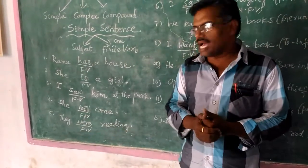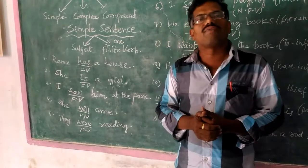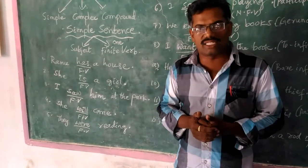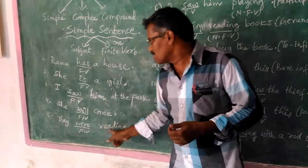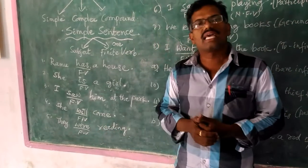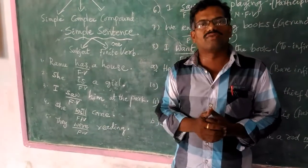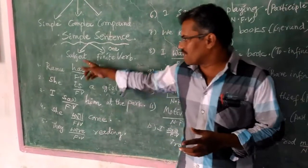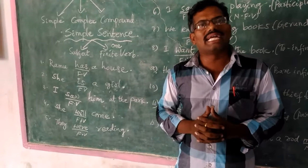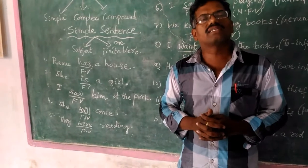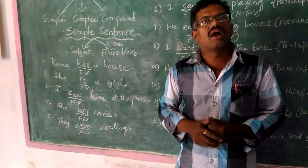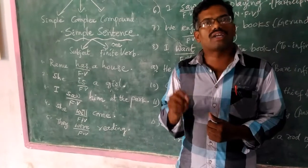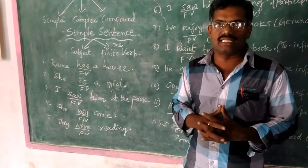In the fifth example, 'were' is the finite verb because it can be changed into other tenses. As this sentence carries only one finite verb, it is called a simple sentence. From these five examples, it is clear that all sentences which have only one finite verb are called simple sentences.